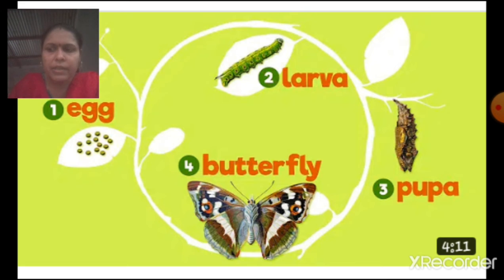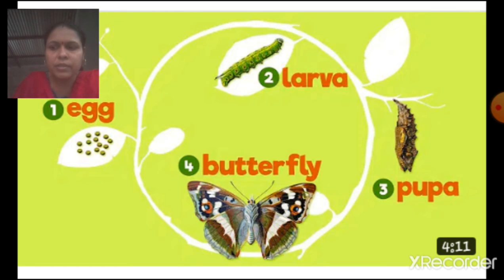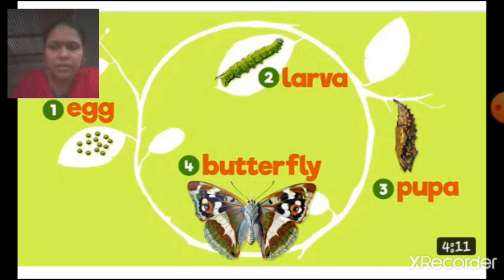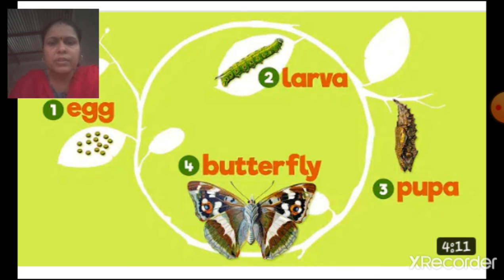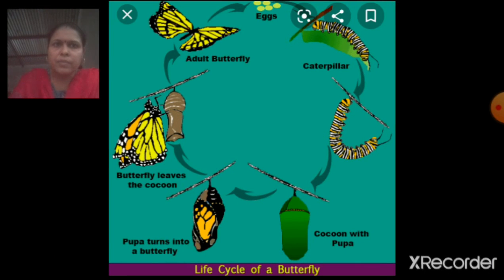It remains inside the chrysalis for the next 11 or 12 days. It does not eat anything during this stage. However, inside the chrysalis, important changes take place in its body. It gets attractive wings, and its growth is completed inside the chrysalis.